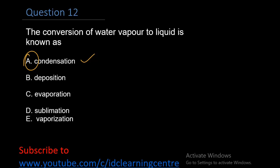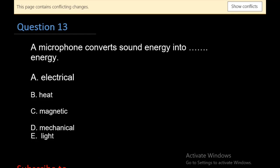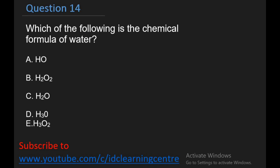Let's look at question 13: A microphone converts sound energy into dash energy. A. Electrical, B. Heat, C. Magnetic, D. Mechanical, E. Light. The right answer is A. Microphone converts sound energy into electrical energy. Question 14: Which of the following is the chemical formula of water? Is it A. HO, B. H2O2, C. H2O, D. H3O, E. H3O2. The right answer is C. H2O is the chemical formula of water.